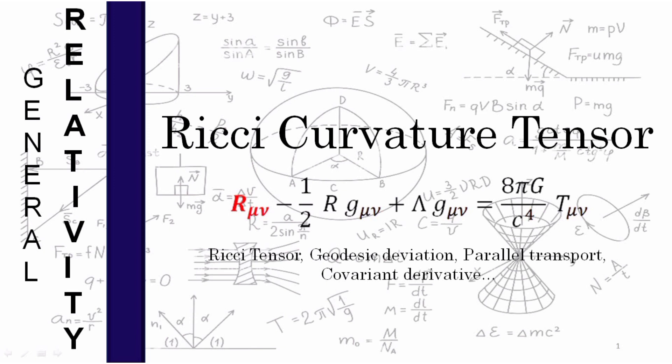In this video we are also going to touch on geodesic deviation, parallel transport, covariant derivative, and certain concepts required to study Ricci tensor. Ricci tensor is by far the most important concept of general relativity, and this video covers in-depth details. My name is Seanak and you're watching this on my channel Physics for Students. My attempt has always been to explain difficult concepts in an easy manner.